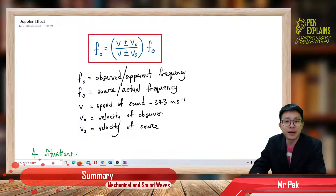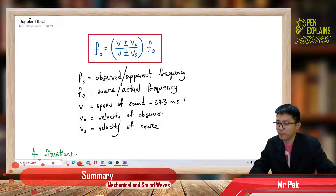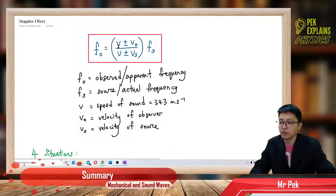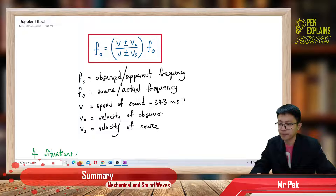Welcome to the final part in mechanical and sound waves. We are going to learn about the Doppler effect. The Doppler effect equation is: the observed frequency f₀ is equal to v plus or minus velocity of observer, divided by v plus or minus velocity of the source, multiplied by the source frequency.